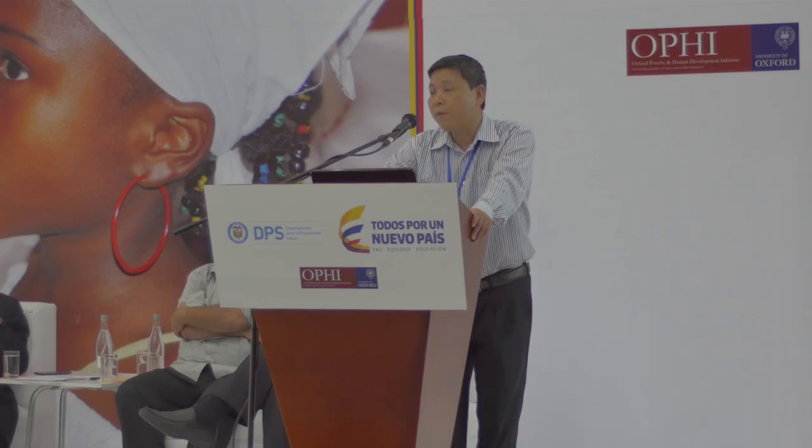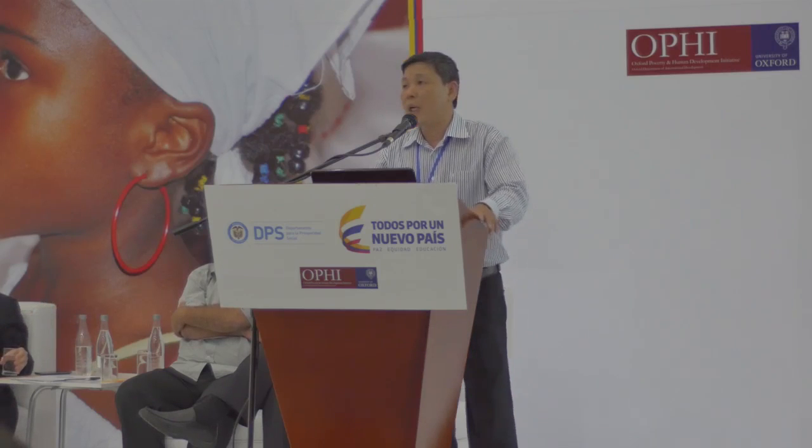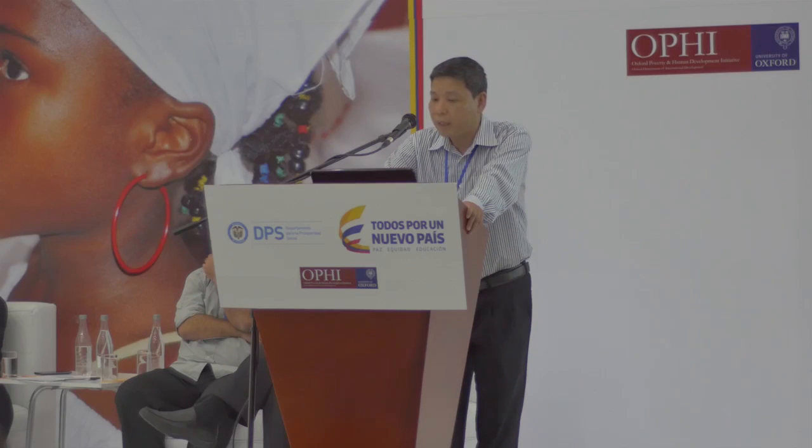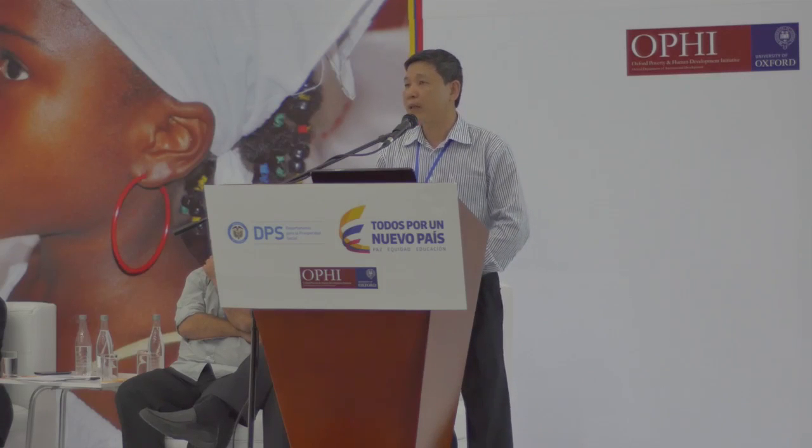In Vietnam at this moment, we have five dimensions of measurement, including healthcare, education, housing, clean water and sanitation, and national data information. For each dimension, we have two indicators, giving 10 indicators in total. For the MPI in Vietnam, the deprivation threshold is set at one-third of the total deprivation score. This is one thing I think is different from other countries.